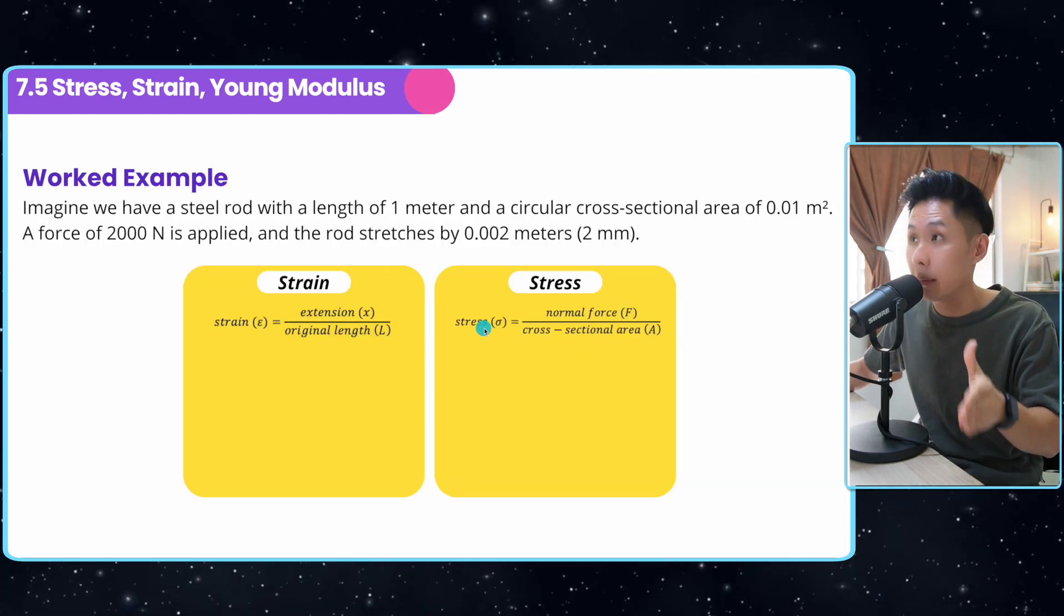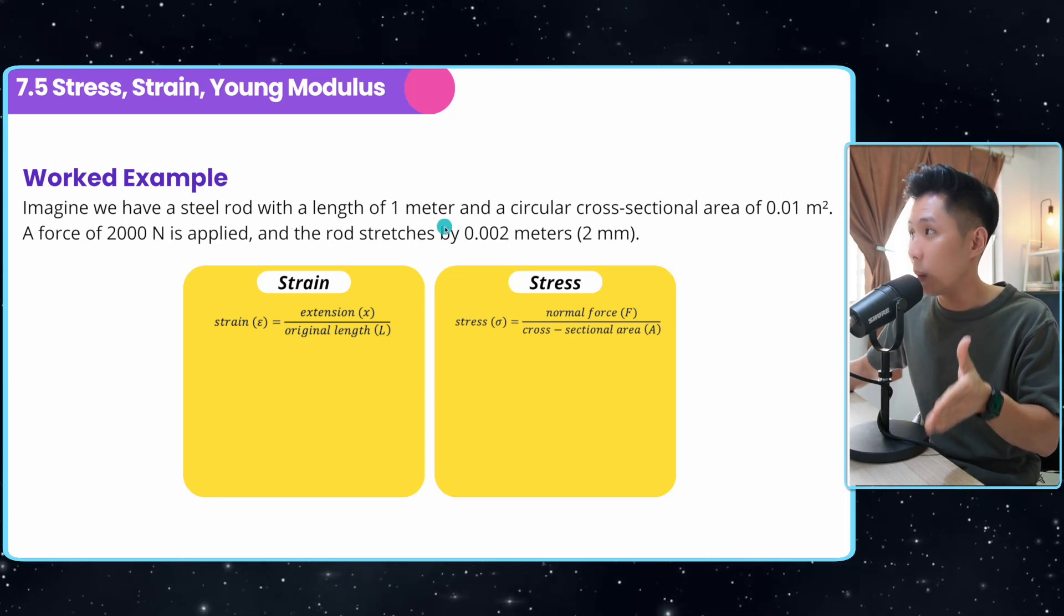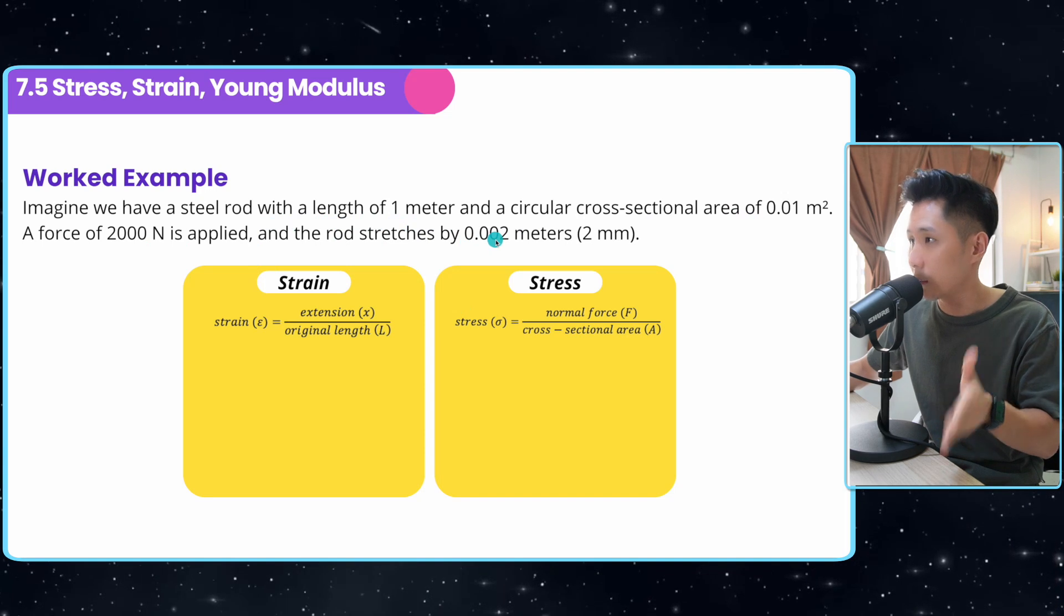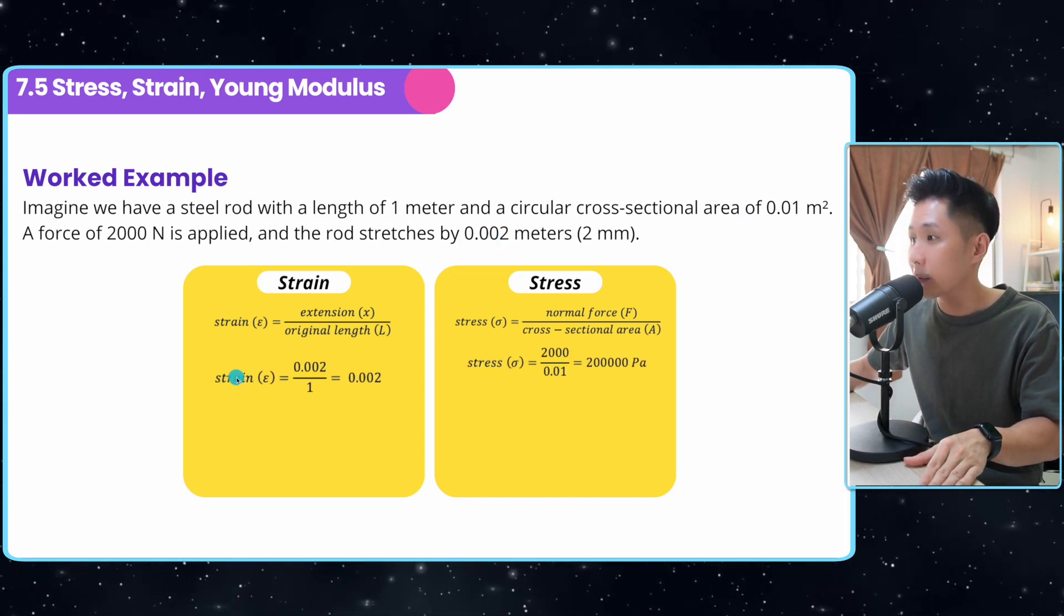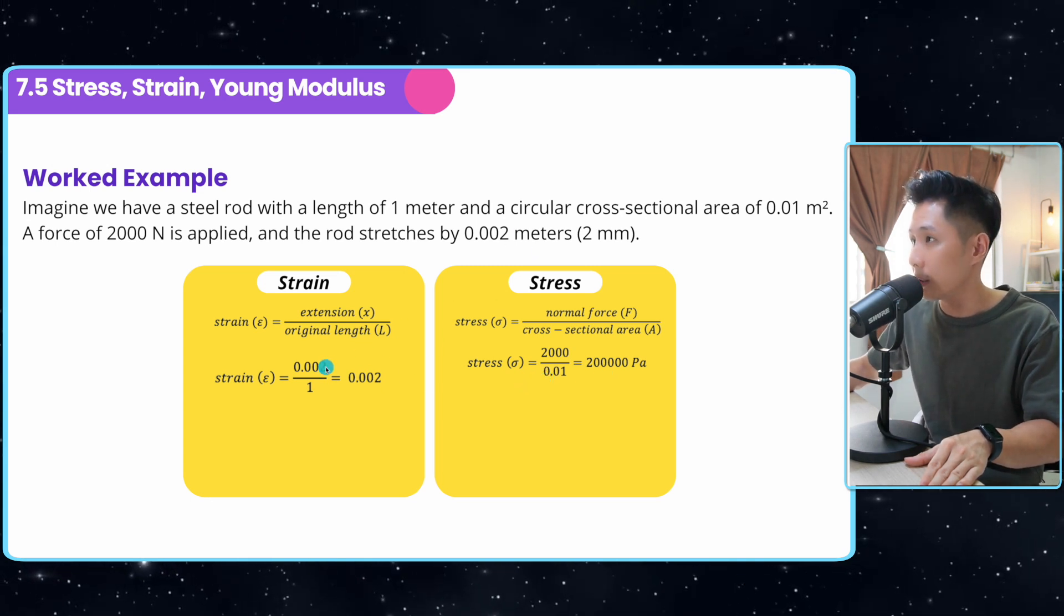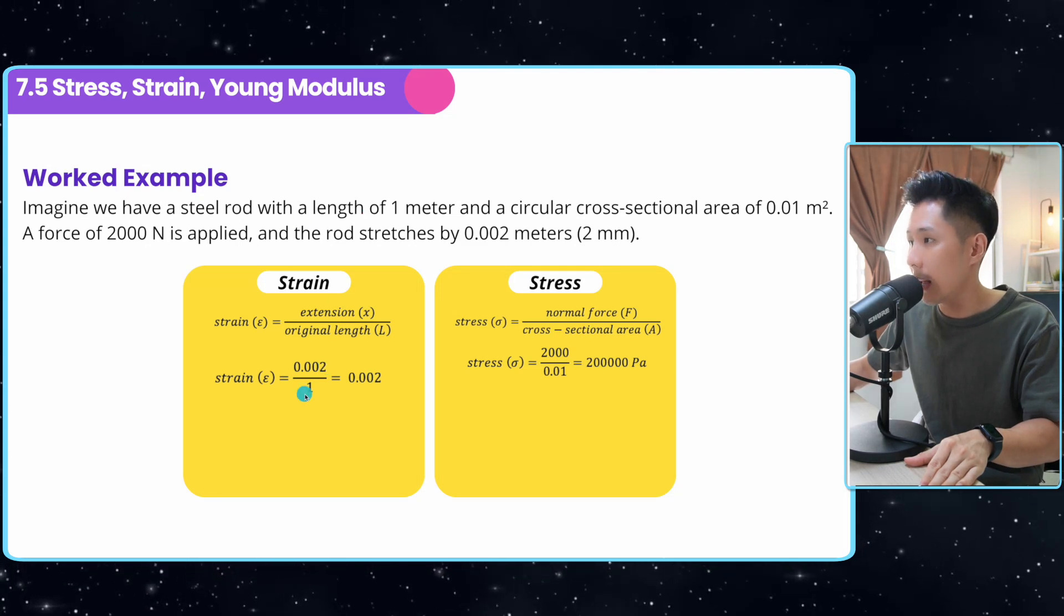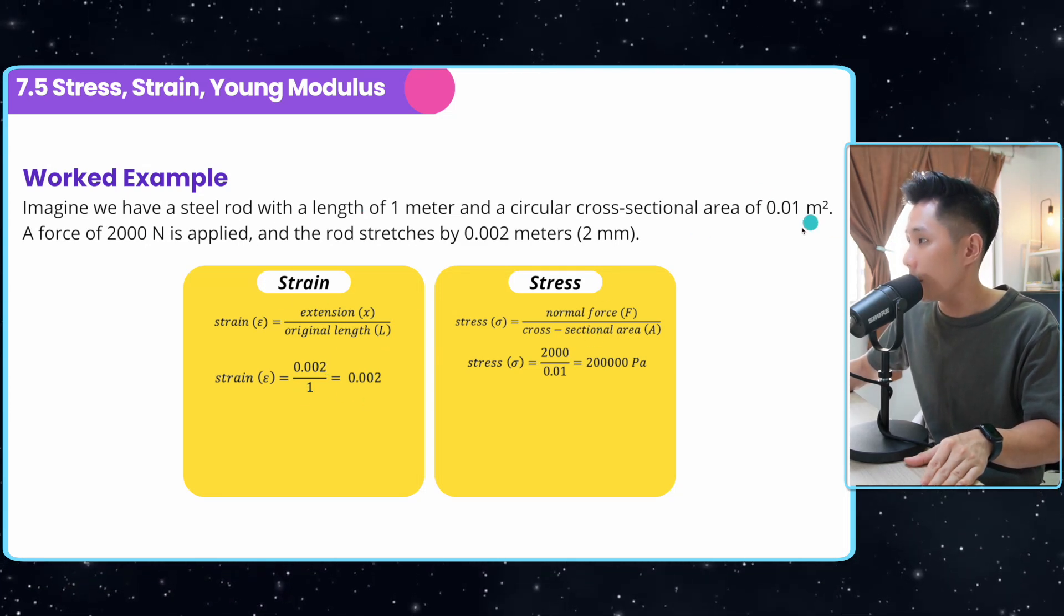Let's solve some questions about stress and strain. Say I have a steel rod with a length of one meter, and this is the area, force, and stress. By using the formula, I can calculate the strain and stress pretty easily. Just substitute the extension into the equation, substitute the original length, you will get the strain, substitute the force, substitute the area, you'll get the stress.